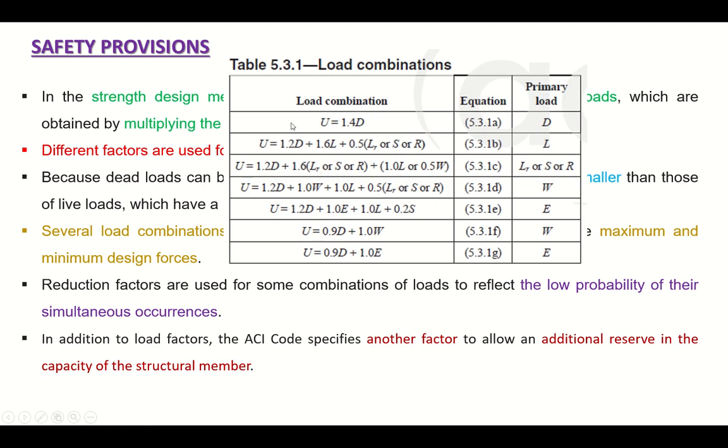Let me show you the load combinations. For example, the first one is from the ACI 318, 2019 edition, which is the latest one. It is Table 5.3.1, and it says that the first combination is 1.4 dead load. Here the primary load is dead load. Or you can use this combination which is 1.2 dead load plus 1.6 live load plus 0.5 into roof live load or snow load or rain load. So here the governing or the primary load is live load because you can see the factor 1.6.